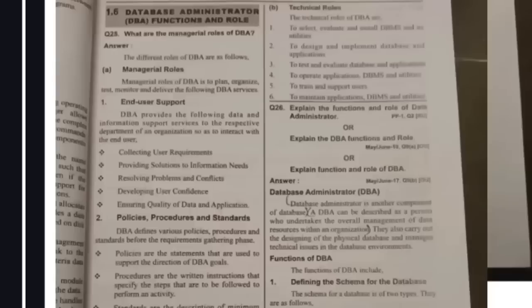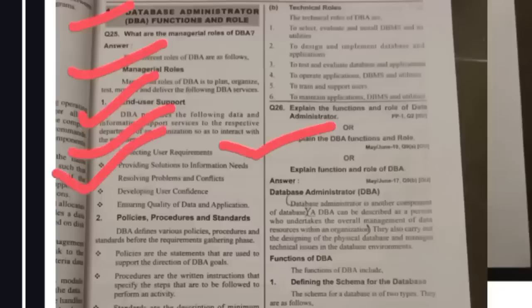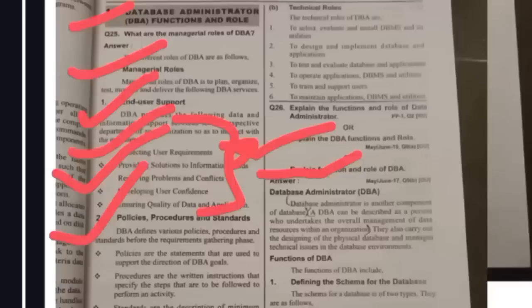The next important question in Unit 1 is: who is a DBA and what are his roles and responsibilities? DBA stands for Database Administrator. His first role is managerial roles and end user support — he interacts with end users as a middle person between the person seeking data and the server. His responsibilities include collecting user requirements and providing solutions to those requirements.